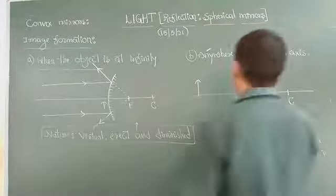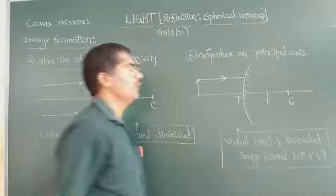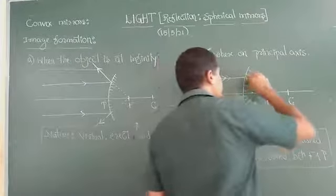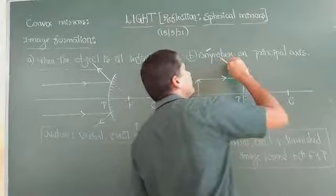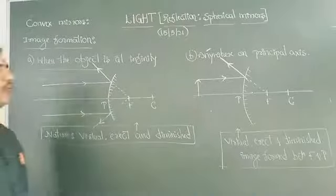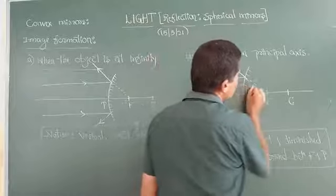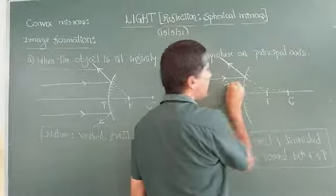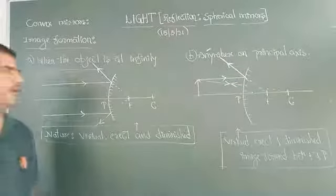Now consider a light ray parallel to the principal axis. If a light ray is parallel to the principal axis, it will appear to diverge from focus. That is one light ray you can draw. By using another rule: a light ray appearing to pass through the center of curvature comes back in the same path. Only these two light rays you can draw.